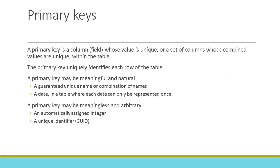A primary key is a column — a field — whose value is unique, or a set of columns whose combined values are unique within the table. The primary key uniquely identifies each row of the table. A primary key may be meaningful and natural, such as a guaranteed unique name or combination of names, or it may be a date in a table where each date can only be represented once. Or a primary key might be meaningless and arbitrary, such as an automatically assigned integer or a unique identifier called a GUID.